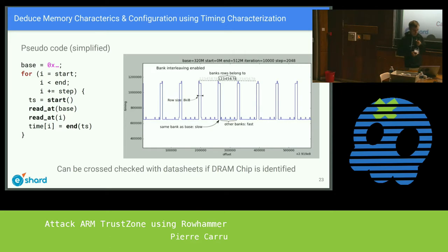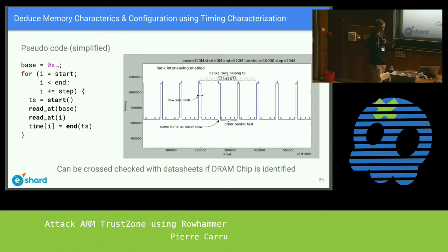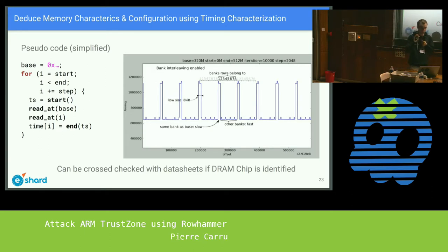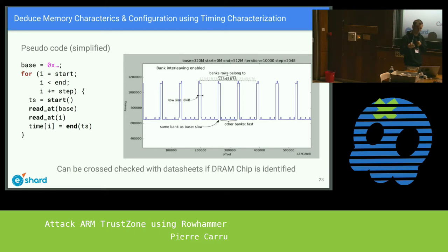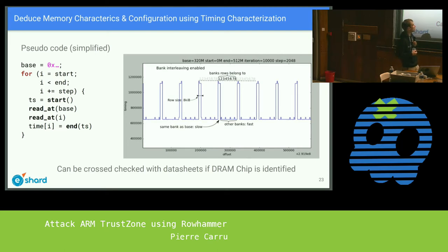Accessing two distinct rows in a single array is slow because the first row has to be refreshed before activating the second. So if you take a base address and access all nearby addresses, sometimes it will be slow — meaning you are in the same bank and array. In our case the DRAM had a row width of 8KB and used eight banks.